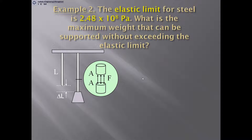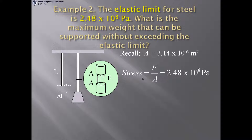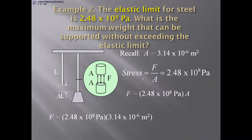Example: The elastic limit for steel is 2.48 × 10⁸ Pascal. What is the maximum weight that can be supported without exceeding the elastic limit? Using the area from the previous example, A = 3.14 × 10⁻⁶ m², and stress = F/A = 2.48 × 10⁸ Pa, solving for F gives F = 2.48 × 10⁸ × 3.14 × 10⁻⁶ = 779 Newton.